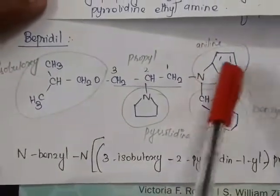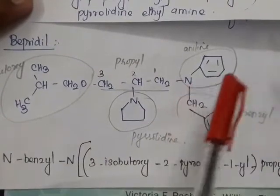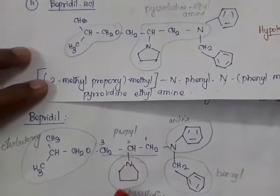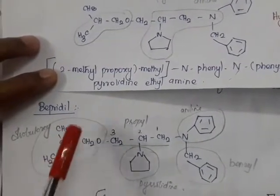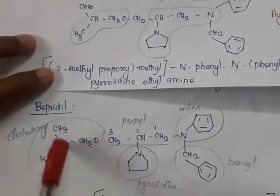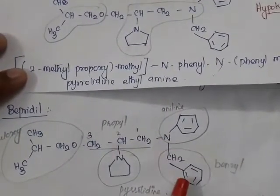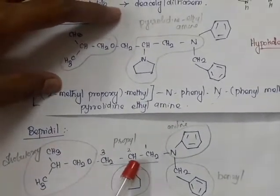Alternatively, with aniline chosen as the parent — a phenyl ring with NH2 — we look at what is attached to nitrogen. Benzyl is attached, and a propyl group is attached. The second carbon of propyl is connected with pyrrolidine, and the third carbon is connected with isobutoxy (a 4-carbon chain with a methyl at position 2 gives isobutoxy). So the name is N-benzyl-N-(3-isobutoxy-2-pyrrolidin-1-yl-propyl)-aniline.